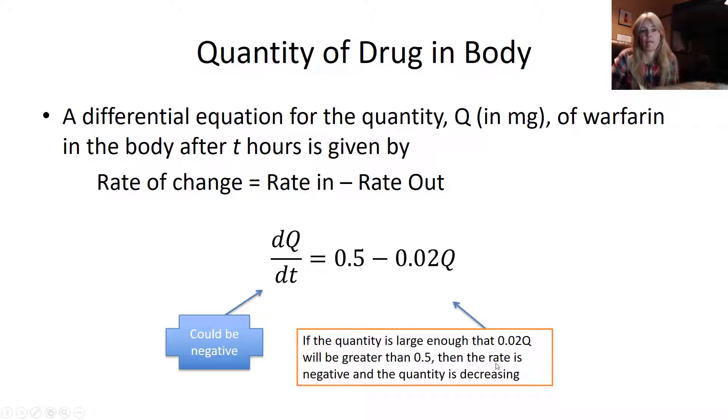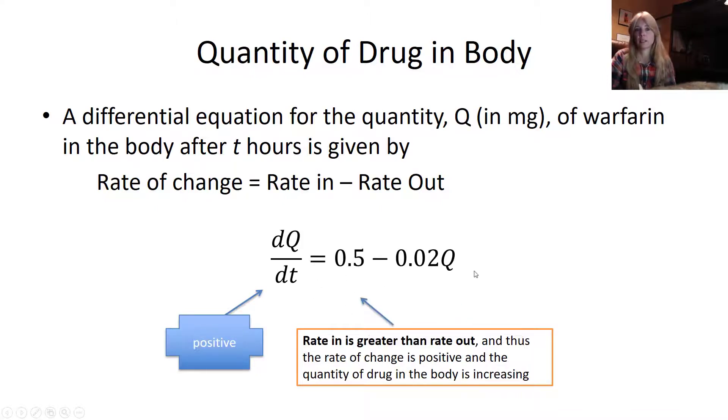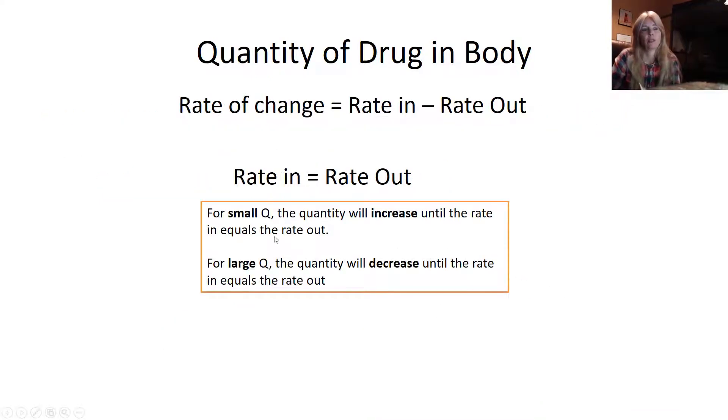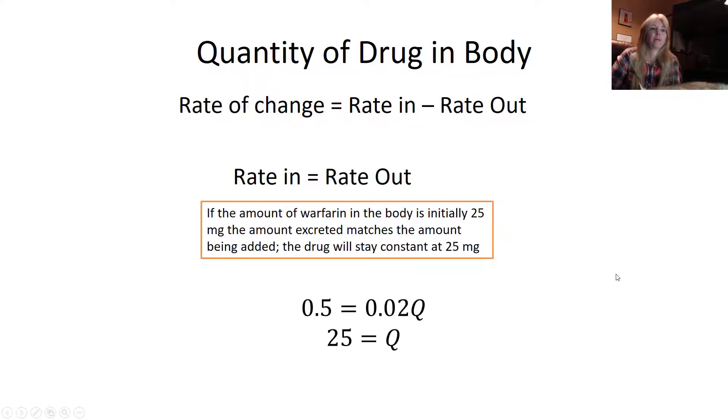If this quantity is large enough, greater than 0.5, then the rate is negative and the quantity is decreasing. If it's positive, then it's trying to reach some equilibrium. If it's negative, it's coming down. For a small quantity Q, it will increase until the rate in equals the rate out. For a large Q, the quantity will decrease until the rate in equals the rate out.